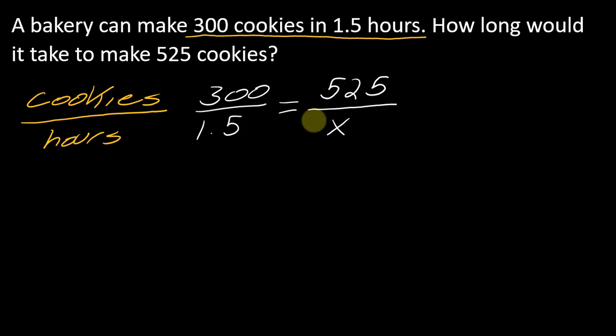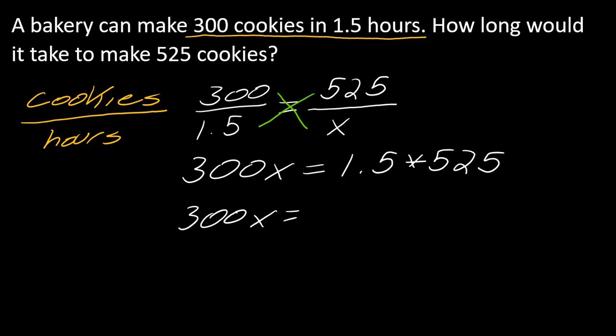To solve problems like this, there's a nice easy way using cross multiplication. That's the idea of going this way and this way. I can do 300 times X equals 1.5 times 525. So 300X equals 787.5, and then I divide both sides by 300.